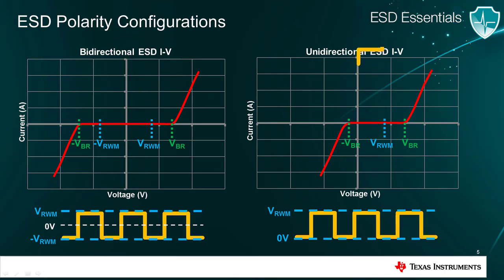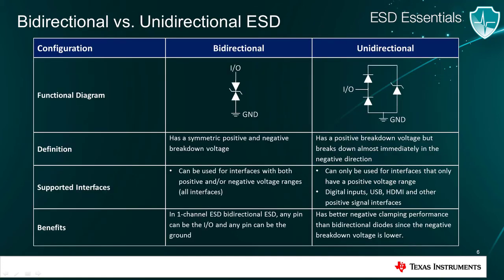However, unidirectional diodes usually offer better negative ESD protection and clamping voltages. In summary, both bidirectional and unidirectional diodes protect against positive and negative ESD strikes. However, bidirectional ESD diodes have a positive and negative breakdown voltage, so they can support all signals within their working voltage range. Unidirectional diodes can only support interfaces that have a positive voltage range, such as USB, HDMI, and other digital inputs, but the benefit is that they offer better negative ESD protection.